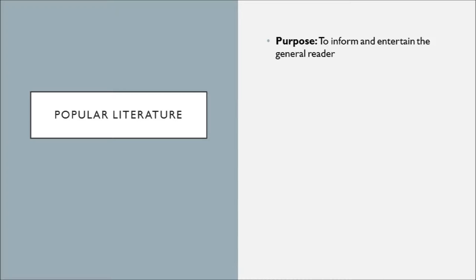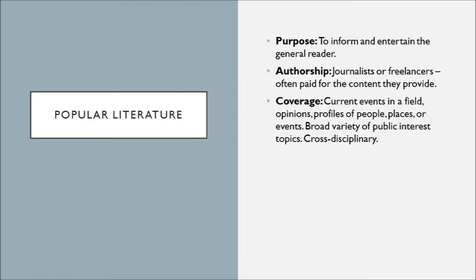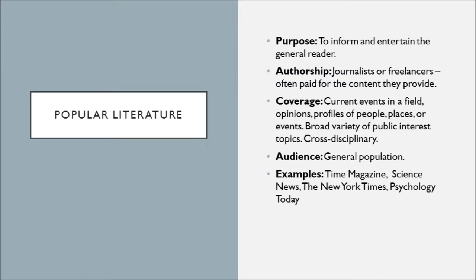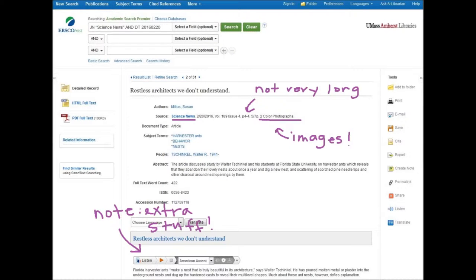Starting with popular literature — the purpose of popular literature is generally to inform and entertain the general reader. The authorship of popular publications is often journalists or freelancers, and they're often paid for by the magazines they work for. Very often these are non-specialists. Coverage for popular literature often includes current events in a field, profiles of people, places, or events, or political opinions. It's often a broad variety of public interest topics, and it's very often cross-disciplinary. The audience is the general population, and examples include Time Magazine, The New York Times, Psychology Today, and Science News. Here is an example of an article found in popular literature.